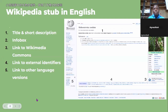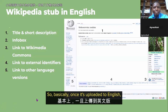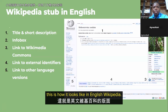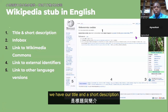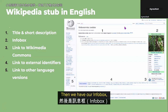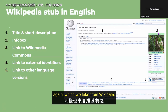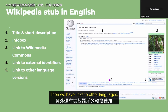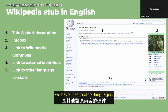Once uploaded to Wikipedia, this is how it looks. We have the title and short description about the biodiversity topic, then an infobox — which can also be a databox drawn from Wikidata — a link to Wikimedia Commons, links to external identifiers, and links to other language versions of the article.